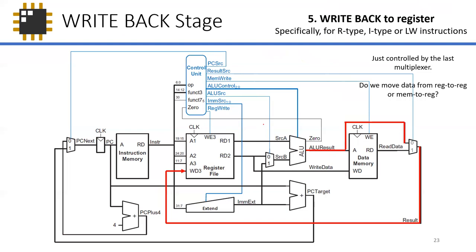The write-back stage is the last stage — when do we write back into the register file? We have two paths: the ALU result, or the data memory read output. If you just select the correct ResultSrc (zero for ALU result, one for data memory read during load word), it writes back immediately. Don't forget to set the write-enable (RegWrite) when writing back into the register file.